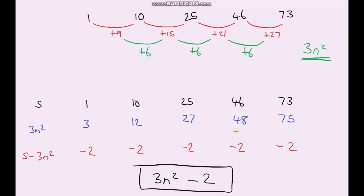Hopefully you found that useful. When thinking about quadratic sequences, always treat the terms as individual sequences — I think that makes it easier to understand. The term 3n² is our quadratic term, which was the first sequence we worked out; and the −2 is our constant, the second sequence. We put them together to get the nth term. Quadratic sequences can also have three terms, and that's what we'll look at in the next video.